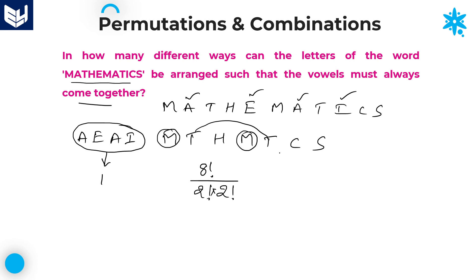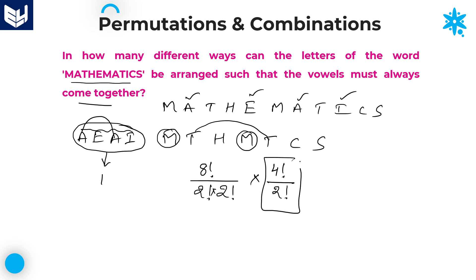Your answer is not yet complete. Within the single entity, we have four vowels, and those four letters can be arranged in 4 factorial ways. But out of those four vowels, A is repeated twice, so we need to divide by 2 factorial as well. The required answer is 8 factorial divided by (2 factorial times 2 factorial), multiplied by 4 factorial divided by 2 factorial — this part is for the single entity and this part is for the consonants and single entity.